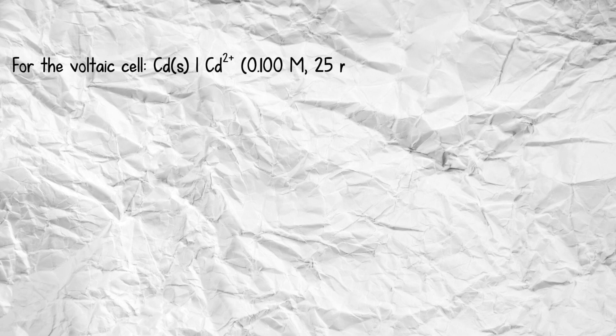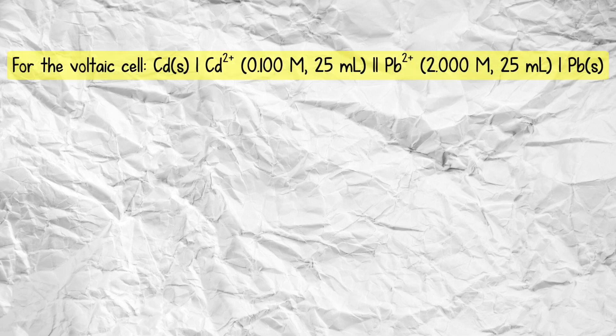Hey, you're on the Tudor Hotline with Melissa Maribel. How can I help you? Hi, this is Brittany, and my question today is in electrochemistry. For the voltaic cell: cadmium solid to cadmium 2-plus ion with a concentration of 0.1 molar in 25 mLs, and the lead 2-plus ion at 2 molar, 25 mLs, to lead solid. Part A: what is E cell initially?